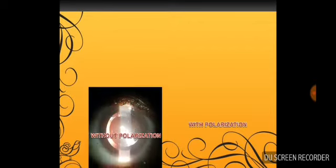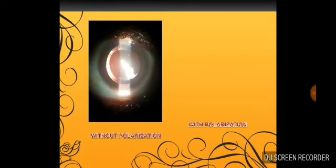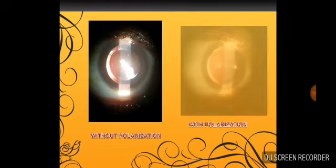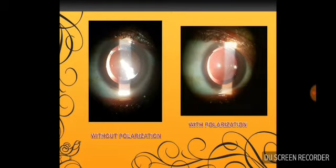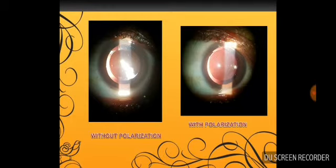Without polarization, see here a lot of reflection through the anterior lens surface. And right side, the surface, his lens is beautiful as you can see. There is no reflection, quite clear image and sharper brighter image.